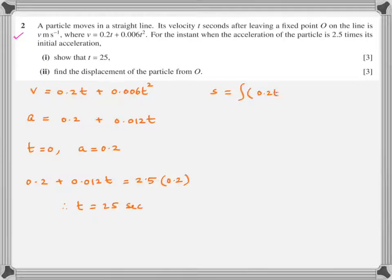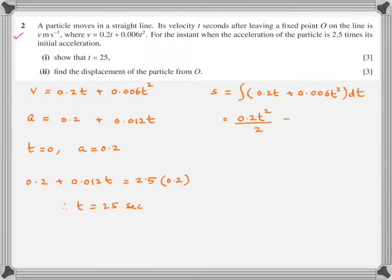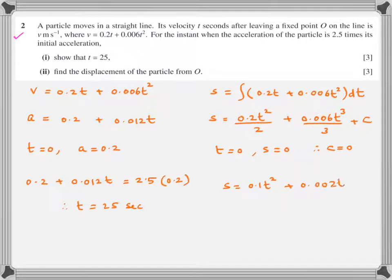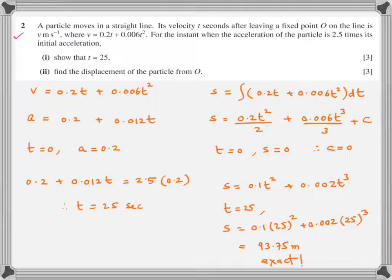To find the displacement equation, note that the velocity is measured t seconds after leaving fixed point O, so the initial condition is: when t = 0, s = 0. The displacement equation is obtained by integrating the velocity equation — never forget the constant of integration. Plug in the initial conditions to find the constant C. Then substitute t = 25 into the displacement equation.